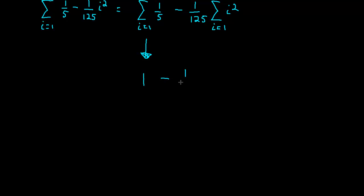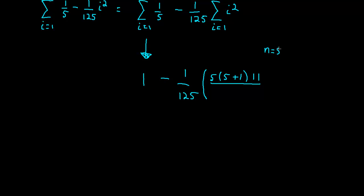Minus 1 over 125. If you look in any calculus book, you can find a formula that tells you how to sum i squared going from 1 to n. That formula is n times n plus 1 times 2n plus 1, all divided by 6. Where n equals 5, that gives us 5 times 6 times 11 divided by 6, which equals 55. So we have 1 minus 1 over 125 times 55. If you crunch these numbers, you should get 14 over 25.